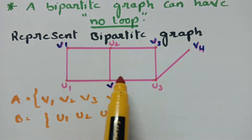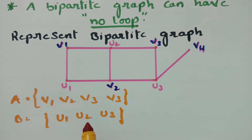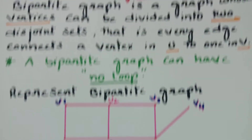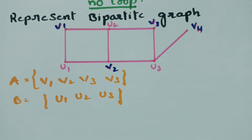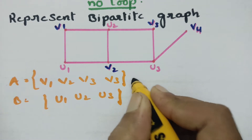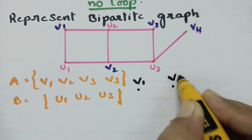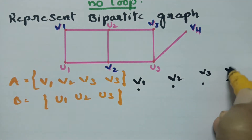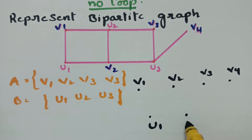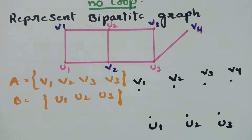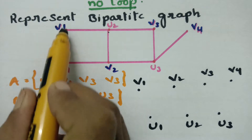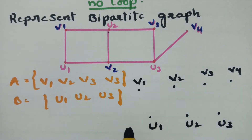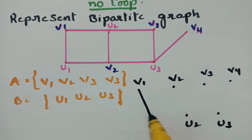We've separated all vertices into two disjoint sets. Every edge must connect a vertex in U to one in V. Starting with v1, it has two edges — one towards u1 and one towards u2. So I'm making those two connections.